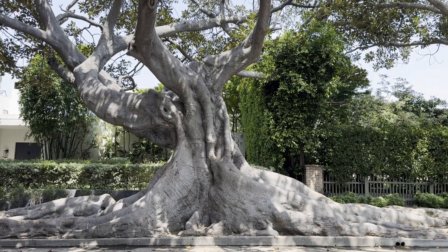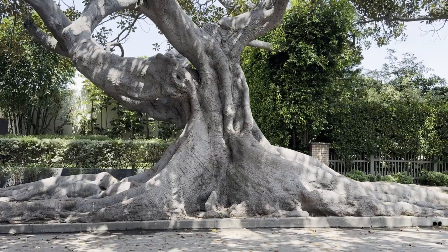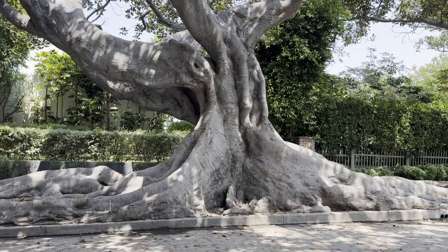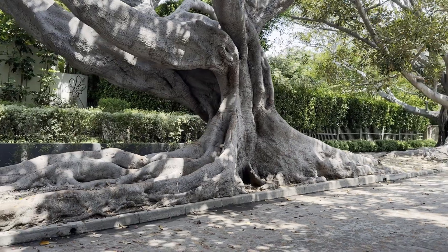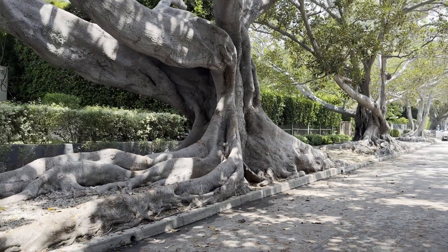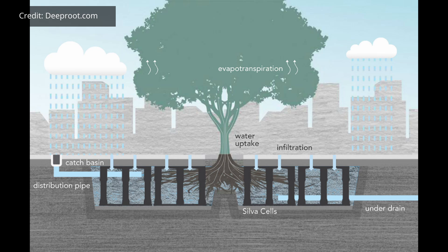Some trees are really resilient and can bust through a cutout and grow as much as they want. But a tree that's successful in those conditions is also causing a lot of infrastructure damage, so it usually ends up getting removed anyway. There have been engineering solutions to reach a compromise between plant needs and building needs, including structural soils, structural cells, and suspended pavement.